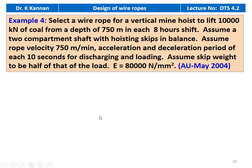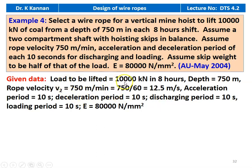Example number 4, from May 2004 question paper. Select a wire rope for a vertical mine hoist to lift 10,000 kilonewton of ore from a depth of 750 meters in each 8-hour shift. Assume two-compartment shaft with hoisting skips in balance. Assume rope velocity is 750 meters per minute. Acceleration and deceleration period of 10 seconds each, discharging and loading 10 seconds each. Assume skip weight to be half that of the load. Young's modulus is 80,000 newton per millimeter squared. Given: depth 750 meter, rope velocity 750 meters per minute equal to 12.5 meters per second.